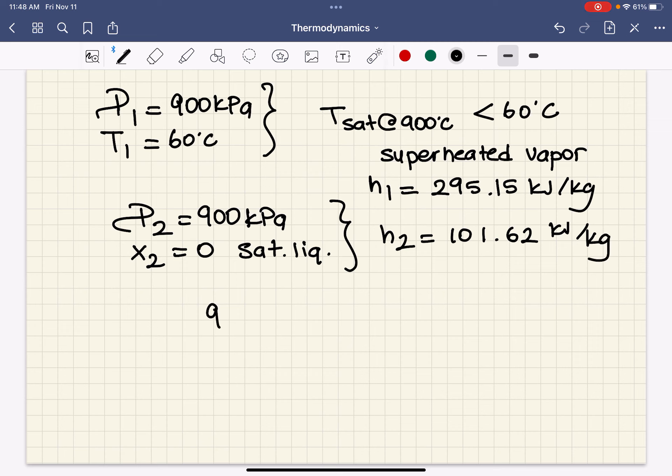So all we have to do is then say H1 minus H2. H1 is 295.15 minus H2 is 101.62, which is 193.5 kilojoule per kilogram.